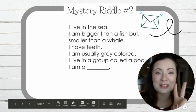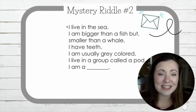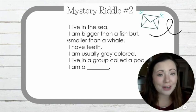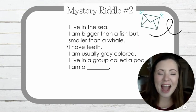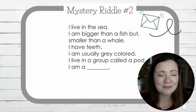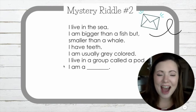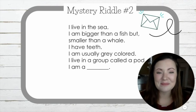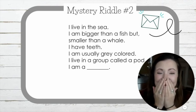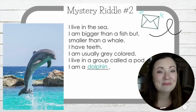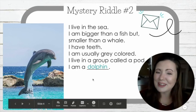Let's do one more. Mystery riddle number two: I live in the sea. I am bigger than a fish, but smaller than a whale. I have teeth. I am usually gray colored. I live in a group called a pod. One, two, three — a dolphin. Did you get that one? A dolphin. Good job with your mystery riddles.